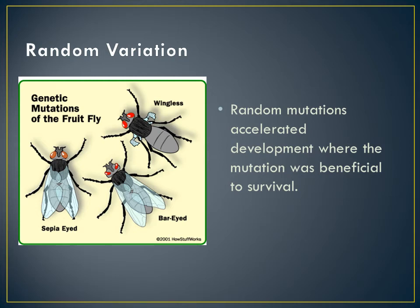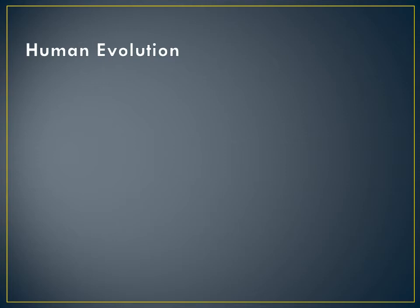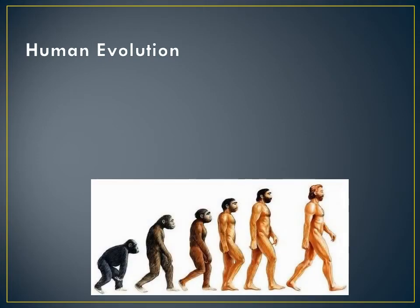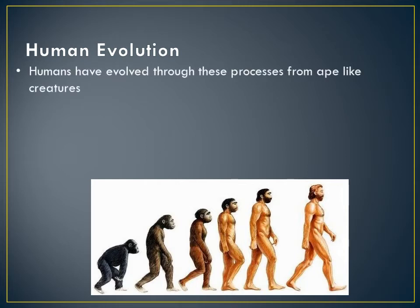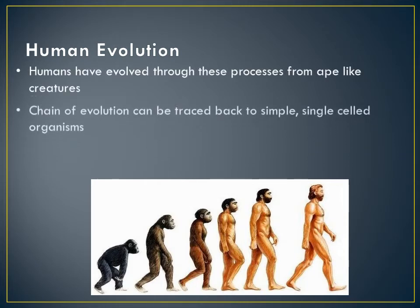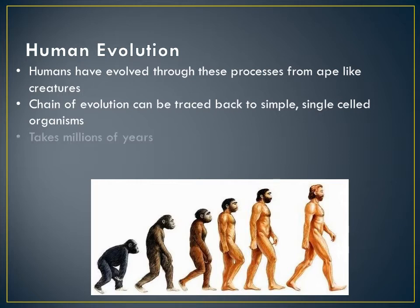A creature which by chance has a characteristic of, say, being slightly taller and thus able to access food sources unavailable to other shorter creatures is more likely to survive when food is scarce, and therefore more likely to pass on that characteristic to offspring. Human evolution operates in just this way. Humans have evolved via these methods from lower life forms into the complex creatures that we are today, from single-celled organisms millions of years ago.